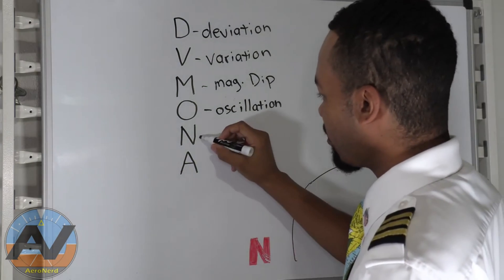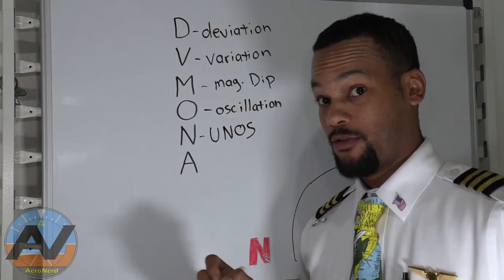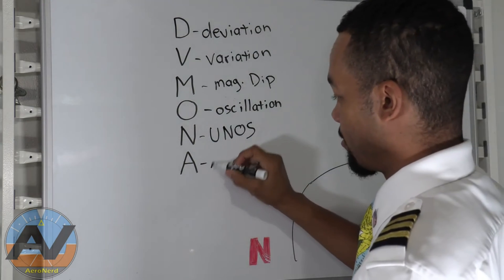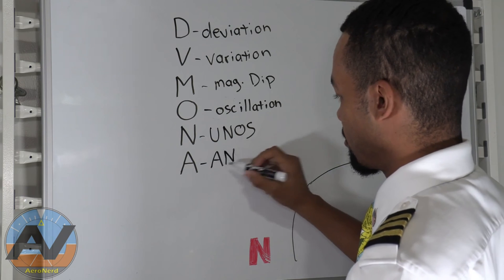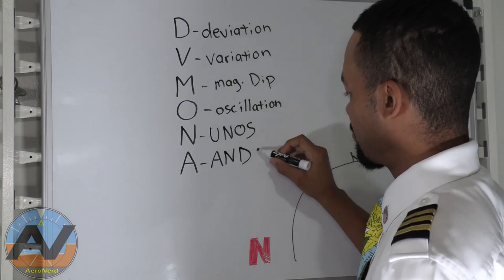And then N, N is for UNOS, UNOS, undershoot north, overshoot south, and then ANDS, accelerate north, decelerate south.